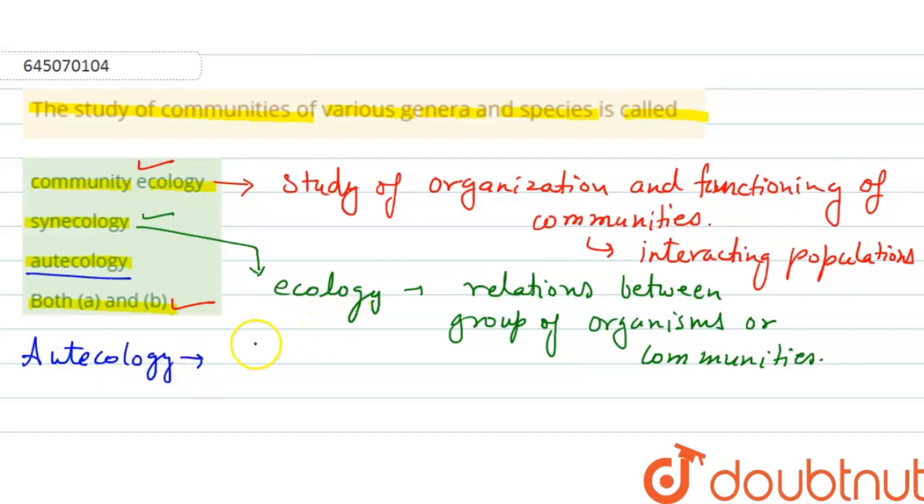Autecology, right, that is the study of single organism, right, a single type of species or a single species, right, or a population of species in respect to their natural habitat.